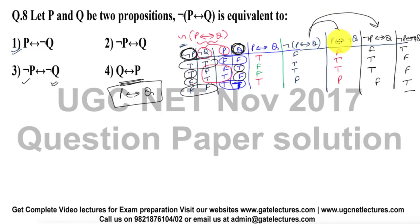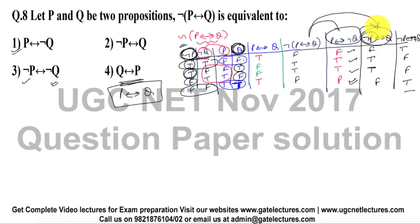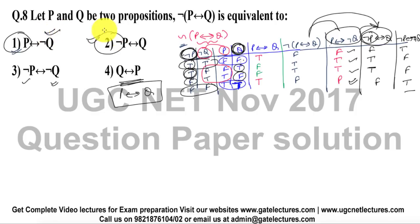We have a confusion between options A and B. Let us recheck: P double implies negation of Q gives values matching our target, and negation of P double implies Q also matches. Therefore, the answer is option number 1 and option number 2 — both of them match the solution for this given problem. Let us look at the next question.